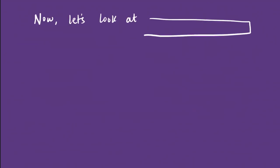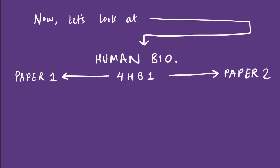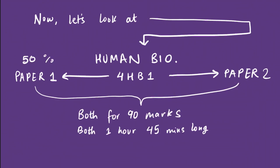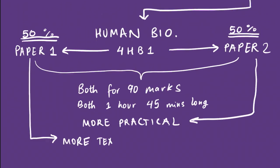Moving on from the biology subject, let's look at human biology, which is the other subject in Pearson-Edexcel IGCSE. It has the code 4HB1, has two papers, both of them for 90 marks, both of them 1 hour and 45 minutes long, and both of them 50% of the IGCSE. Even in this one, paper 2 is more practical while paper 1 focuses more on textbook knowledge.